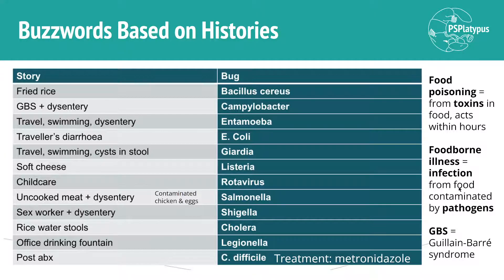A distinction between food poisoning and foodborne illness. Food poisoning is due to those enterotoxins produced by bacteria, and it acts within hours — bacteria have been replicating and producing toxins in the food. Even if you cook the food afterwards and kill the bacteria, the toxins are still present, so you still get sick quickly. In contrast, foodborne illness is infection from food contaminated by actual living, replicating pathogens — you eat the food, and then you get an infection.